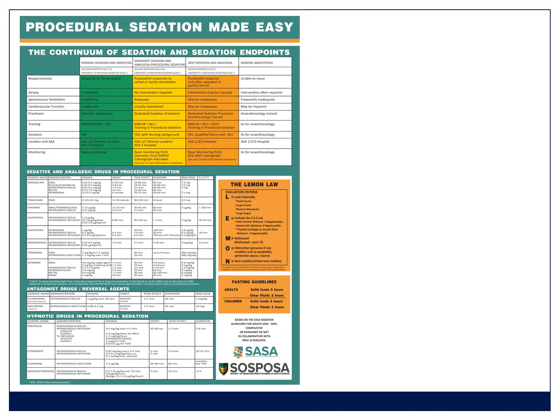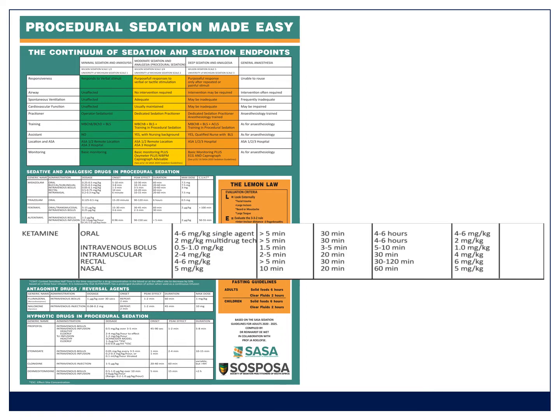Now for dosing — Simon went through this, but you don't have to store these in your head. Just cheat: get the Sasa sedation poster, put it on the wall, and look at it every time you use the drug. It's got all the drugs, it's an excellent resource, and it's freely available. Print it out and put it on your wall — all the ketamine dosing is right there.